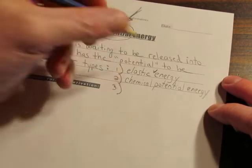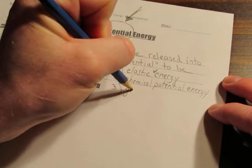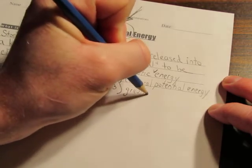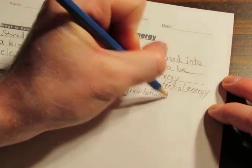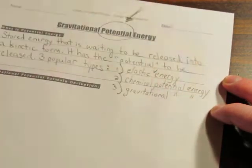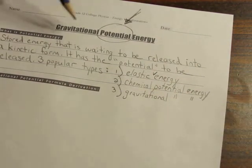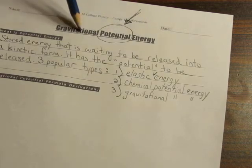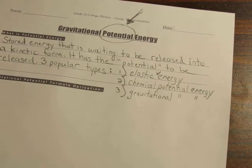Number three, the one we deal with specifically in this class this year, is gravitational potential energy. You can see at the top here, the title is gravitational potential energy. In grade 11 physics, that's the type of potential energy that we do, and it's probably the easiest calculation in the entire course.